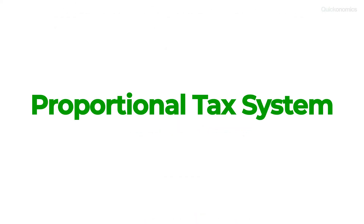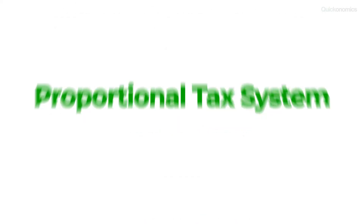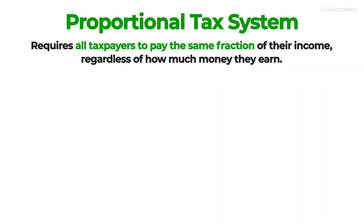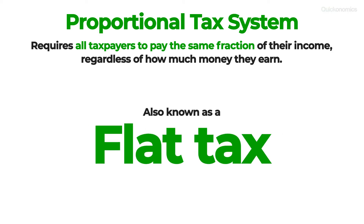Let's start with the proportional tax system. Proportional taxes require all taxpayers to pay the same fraction of their income, regardless of how much money they earn. That means the tax rate doesn't change as the income increases or decreases. Therefore, this system is also commonly referred to as a flat tax.